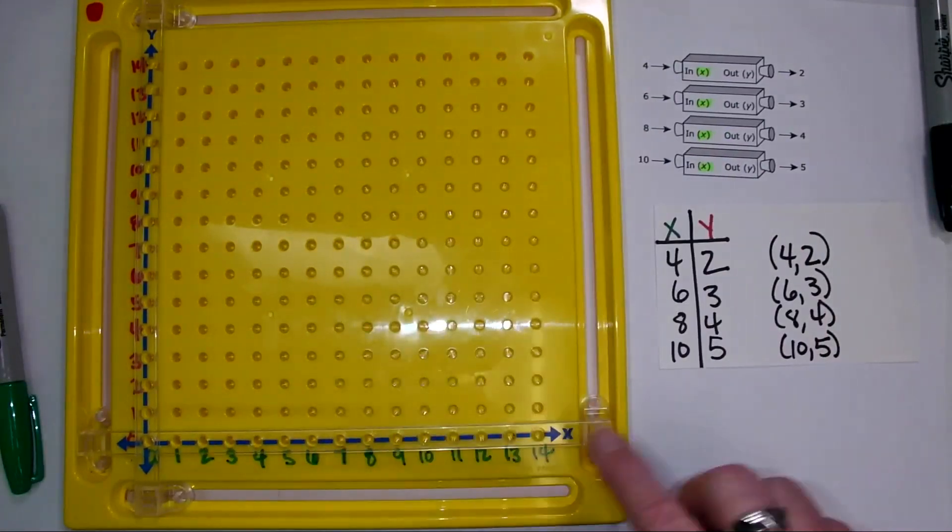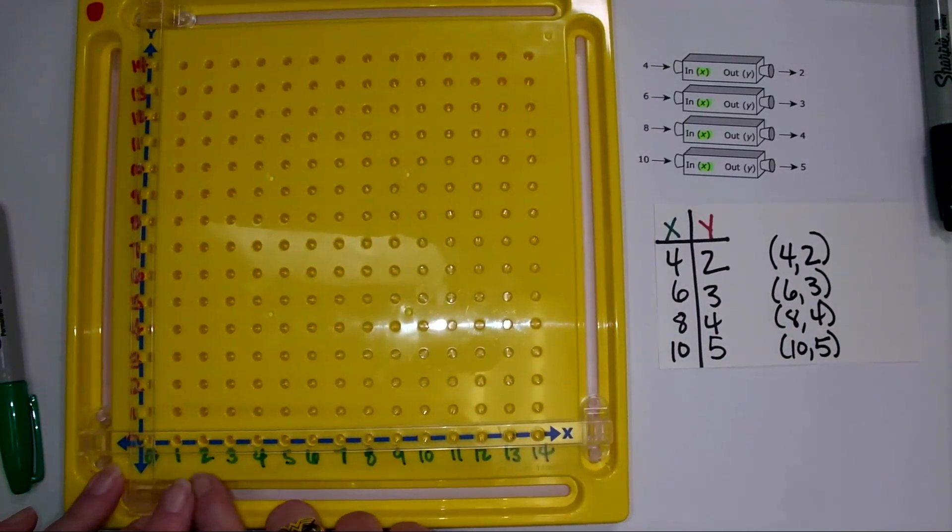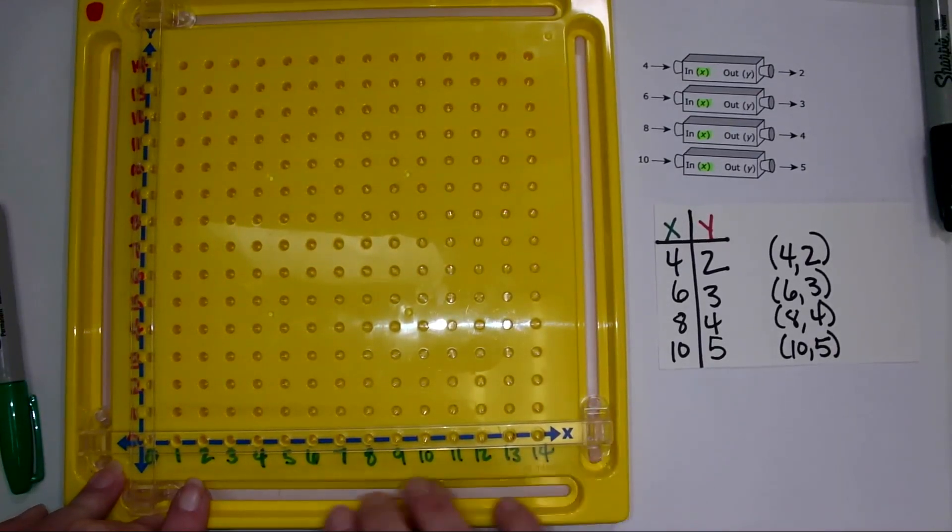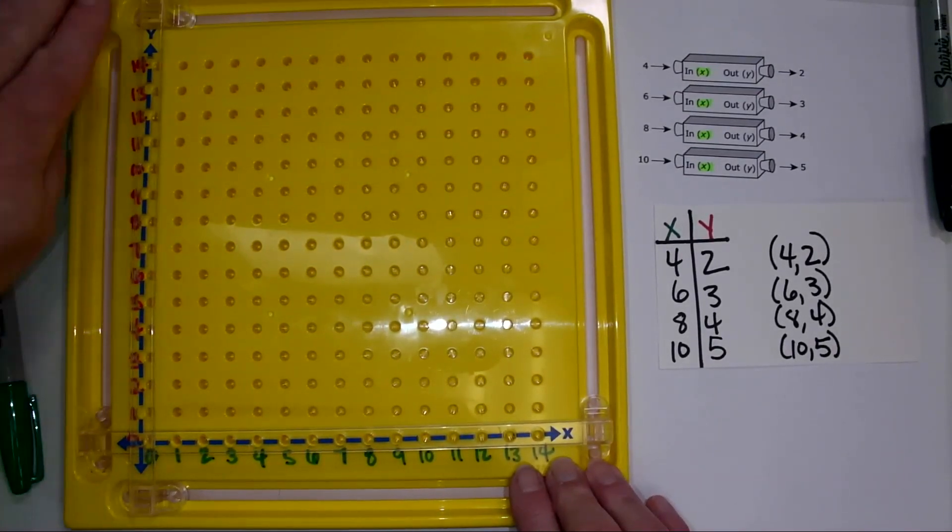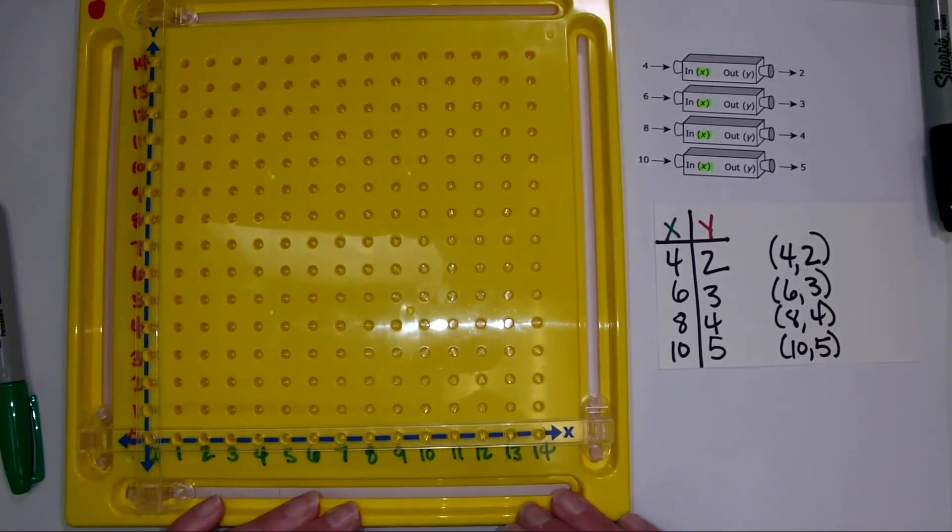Now we're going to use the pegboard. Now I've written my x axis, my numbers on my x axis in green because green goes first and my numbers on the y axis are in red because we stop, we wait. We don't do y until after the x has gone first.